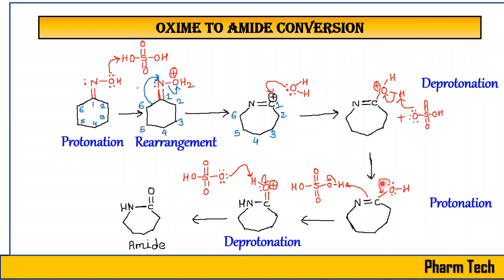This intermediate will undergo tautomerism — it will rearrange, and the hydrogen will be taken up by the nitrogen. Ultimately you will get an N–H, C=O (amide) form — a protonated form of the previous derivative. At the end, the conjugate base will abstract the proton, and there will be formation of the amide. This is how the Beckmann Rearrangement occurs.